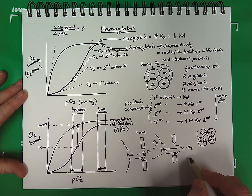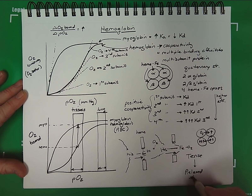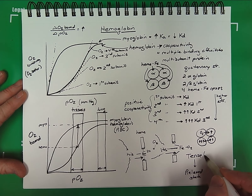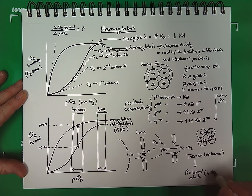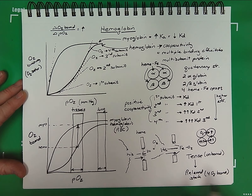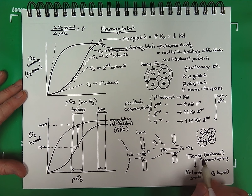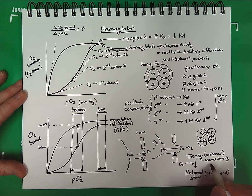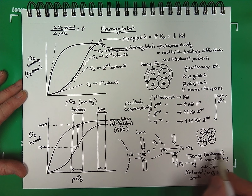Textbooks describe this as going from a tense to a relaxed state. Tense is the unbound form of hemoglobin, and relaxed is the form with four oxygens bound. Think of it as a wound spring — there is lots of energy in a wound spring. Every time an oxygen binds, it causes a relaxation of the spring. Eventually, when four oxygens are bound, the quaternary structure of hemoglobin is in a fully relaxed state.